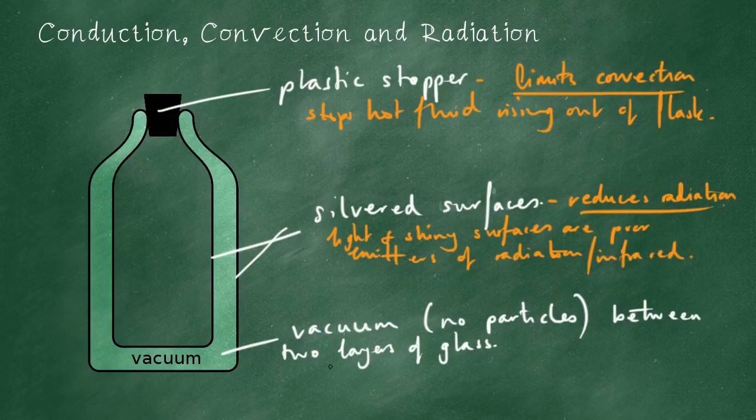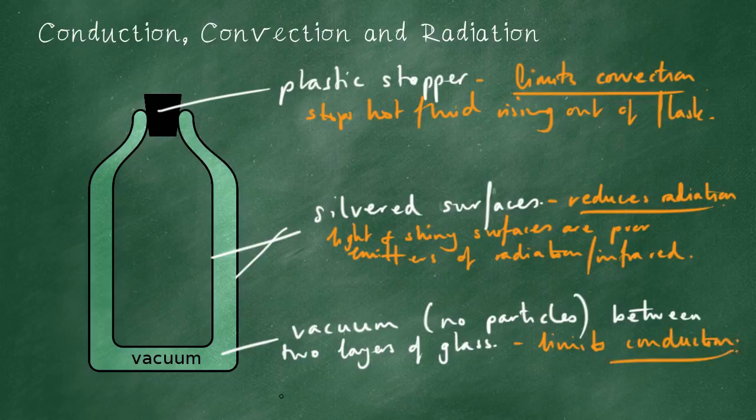The vacuum - there's no particles between the two layers of glass, so there can be no conduction or very little conduction. It limits conduction. Explain that: conduction requires particles to travel.